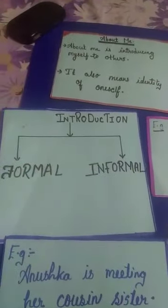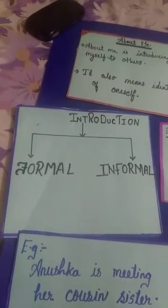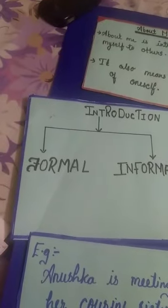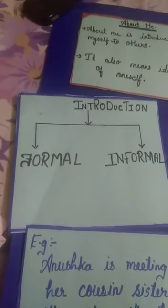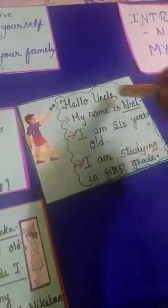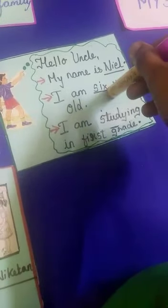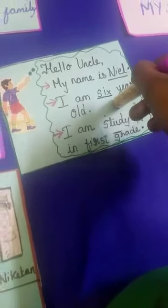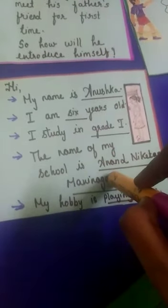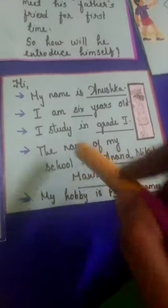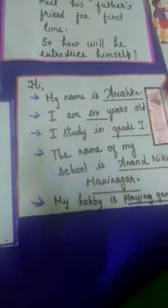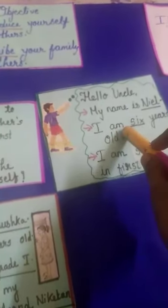Now we have seen formal and informal introduction. In the formal introduction, we have certain limitations — we don't introduce which grade or school we study in, our hobby, phone number, address, or family details. But in informal introduction, we introduce everything about ourselves: which school you study in, your hobby, and you can even share your phone number with a person you know.